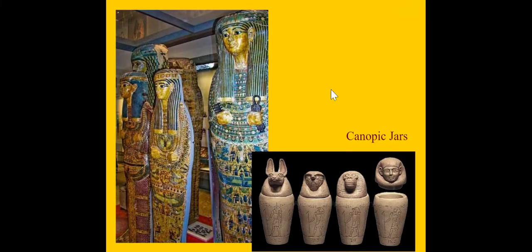Here are some examples of the coffins that they used and also the canopic jars. What those jars were for were for some of the organs. If you guys know about mummies, then you know that they removed the organs, except for the heart, before the important people were buried. They kept the organs in those little jars — there were always four of them.